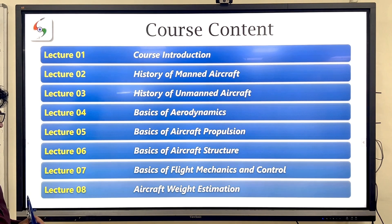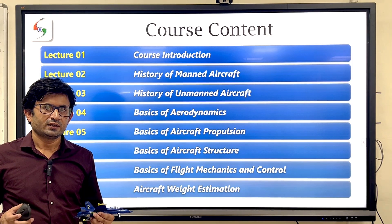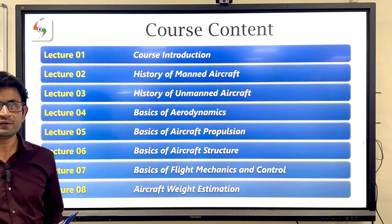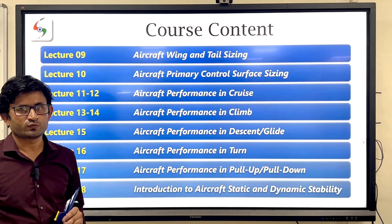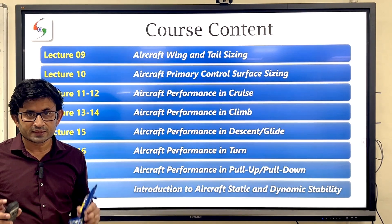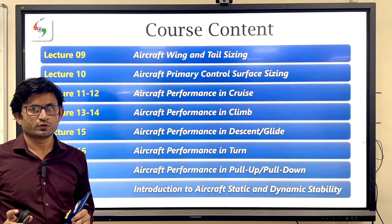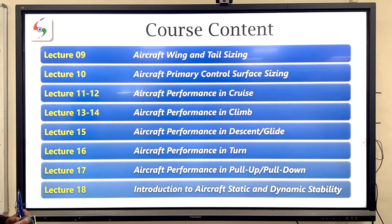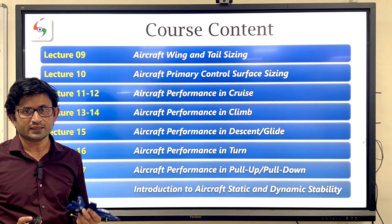In lecture 8, we will move closer to the core subject — based on our requirements we will estimate our aircraft weight. In lecture 9, once the aircraft weight is finalized at a preliminary stage — and I repeat, at a preliminary stage; if the requirements are not met, you have to reiterate — once the weight is finalized, we have to size the wing to lift the weight and size the tail to provide stability.